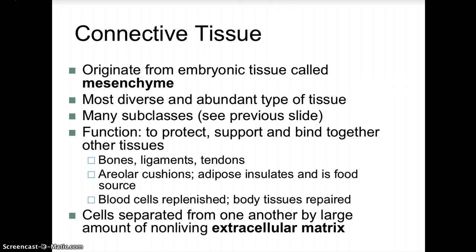Connective tissue originates from the embryonic tissue called mesenchyme and is the most diverse and abundant type of tissue in the human body. Its function is to protect, support, and bind together other tissues, including bones, ligaments, and tendons. Areolar cushions, adipose insulates and is a food source, blood cells are replenished, and body tissues are repaired. Cells are separated from one another by large amounts of non-living extracellular matrix.